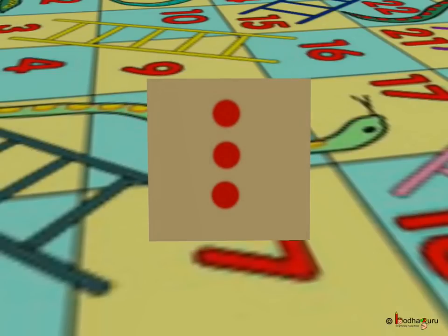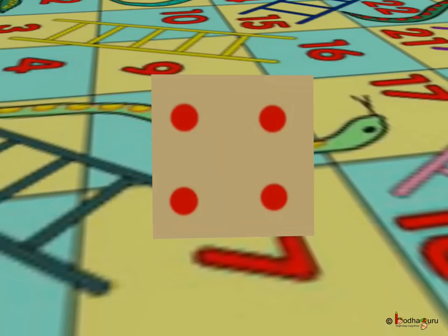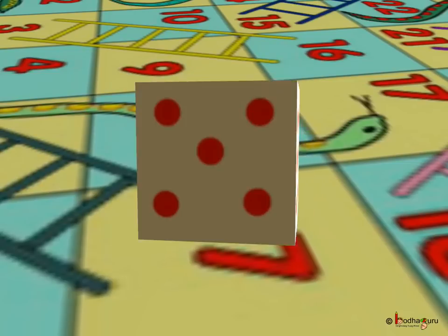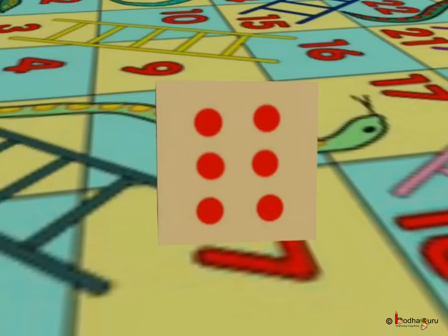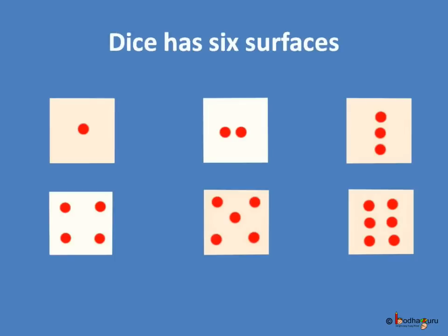four, five, or six dots on the top side of the dice, and that many boxes you move ahead on the board. So the dice has six surfaces with a different number of dots on each surface.